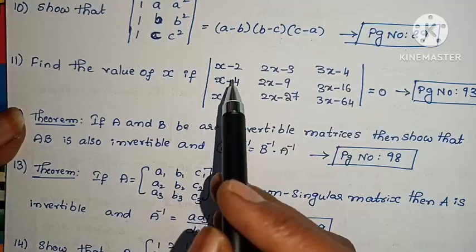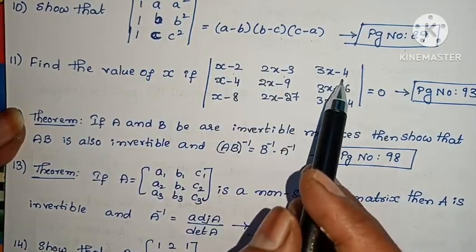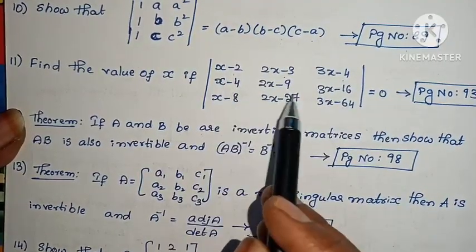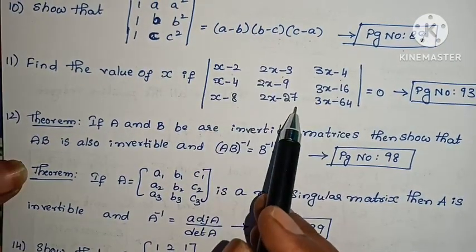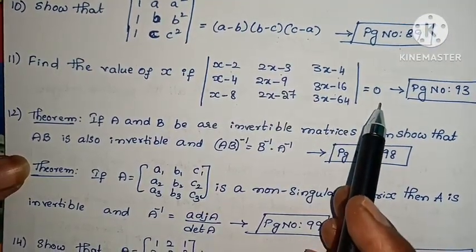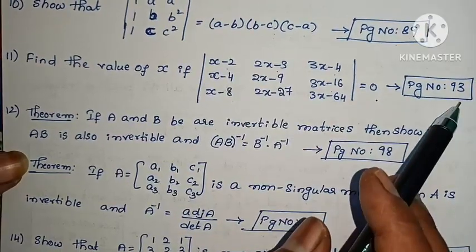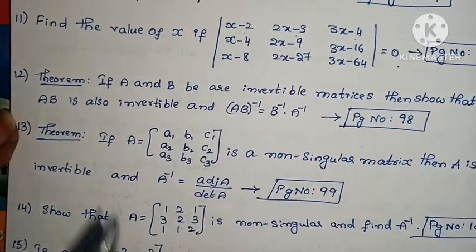Find the value of x if determinant of |x-2, 2x-3, 3x-4; x-4, 2x-9, 3x-16; x-8, 2x-27, 3x-64| is equal to 0. Page number 93. Next, twelfth one.